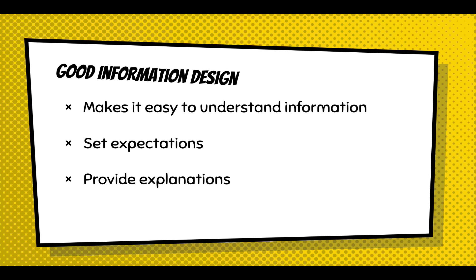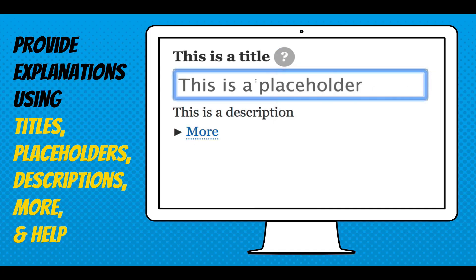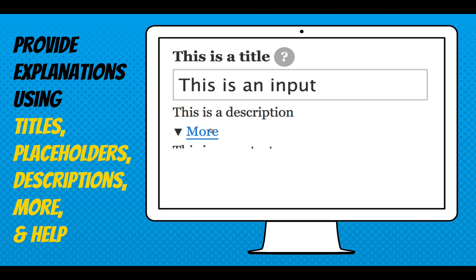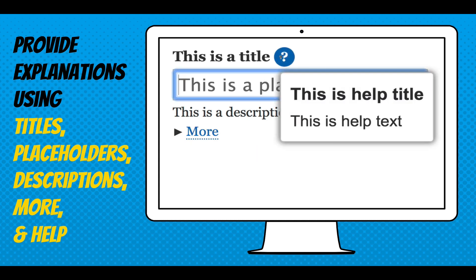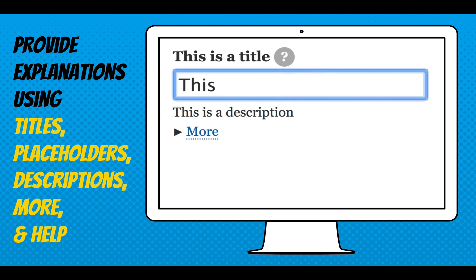Someone should be able to look at the form and say: 'they want my contact information' or 'they want my medical history.' That sets an expectation. It's also important to provide explanations — if you're asking for someone's medical history, explain why you need it: 'to give you better care.' You can provide explanations using titles, placeholders, descriptions, 'more' links, and help. You can add a simple title, a little question mark that opens a tooltip, placeholder text, a description, or a 'more' slideout. Don't use every single one, but they're all available.